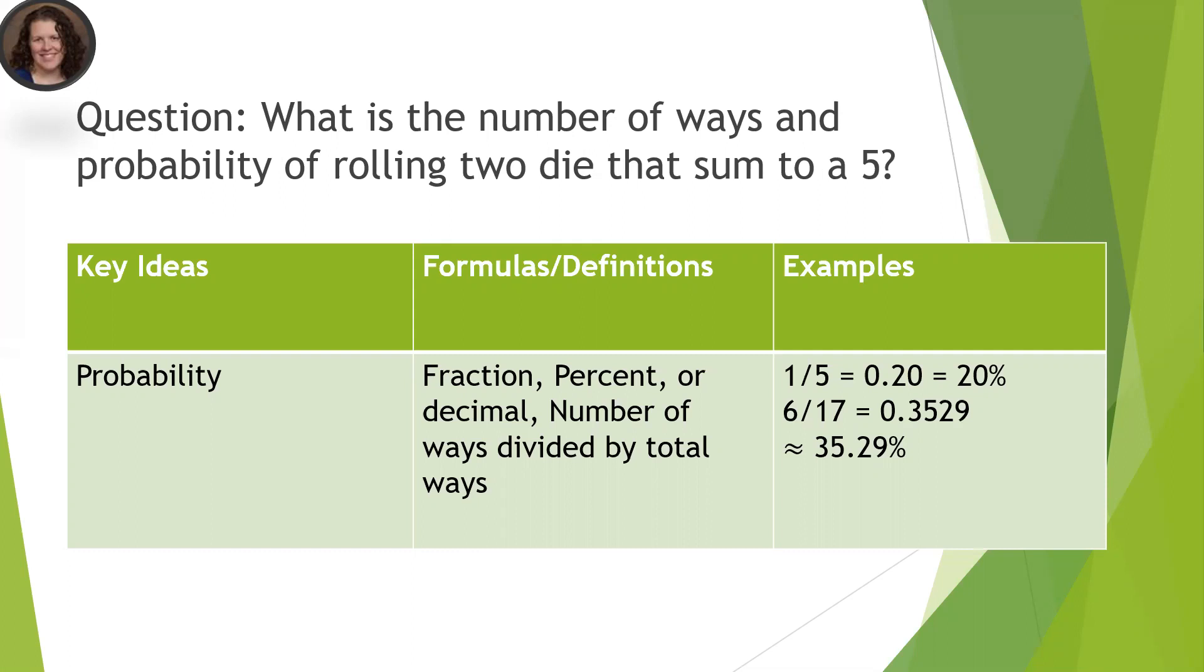So an example of an answer as a fraction would be one-fifth. One-fifth, when you take one and divide it by five as a decimal, you get 0.20, and as a percent you multiply your decimal by 100 to get 20%. So say if you had 6/17 as your probability as a fraction, you would type into your calculator 6 divided by 17 to get 0.3529, it's a repeating decimal, and then you'd multiply this by 100 to get the percent.